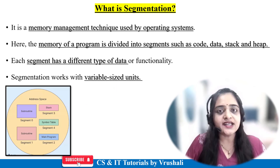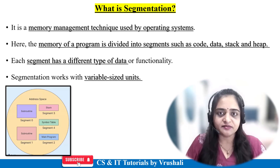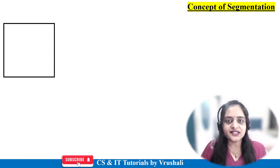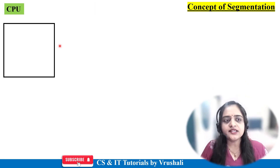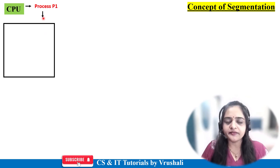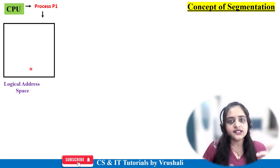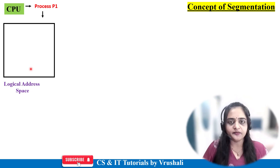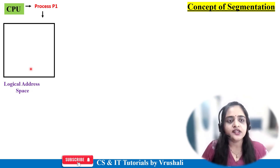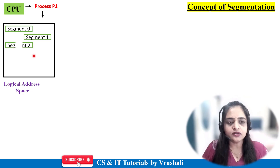Now let's understand the segmentation concept in operating system. Suppose the CPU wants to execute process P1, and this process P1 is stored in logical memory, because the CPU interacts with logical or virtual memory only. The CPU provides the logical address to the particular process. Now this process is stored in logical memory in the form of segments — for example, segment 0, 1, 2, 3, 4, and 5.